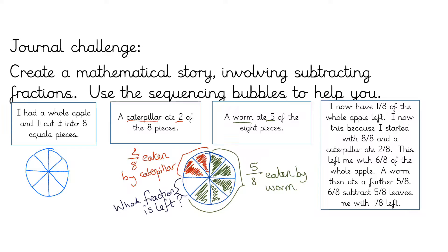I then need to work out how much is left. I now have one eighth of the whole apple left. I know this because I started with eight eighths and a caterpillar ate two eighths. This left me with six eighths of the whole apple. A worm ate a further five eighths, so six eighths subtract five eighths leaves me with one eighth.